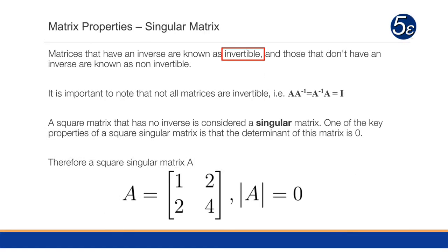Matrices that have an inverse are known as invertible, and those that don't have an inverse are known as non-invertible. Now, it's important to note that not all matrices are invertible. That is, a matrix multiplied by its inverse is equal to the inverse matrix multiplied by itself, and both of those would equal the identity matrix.